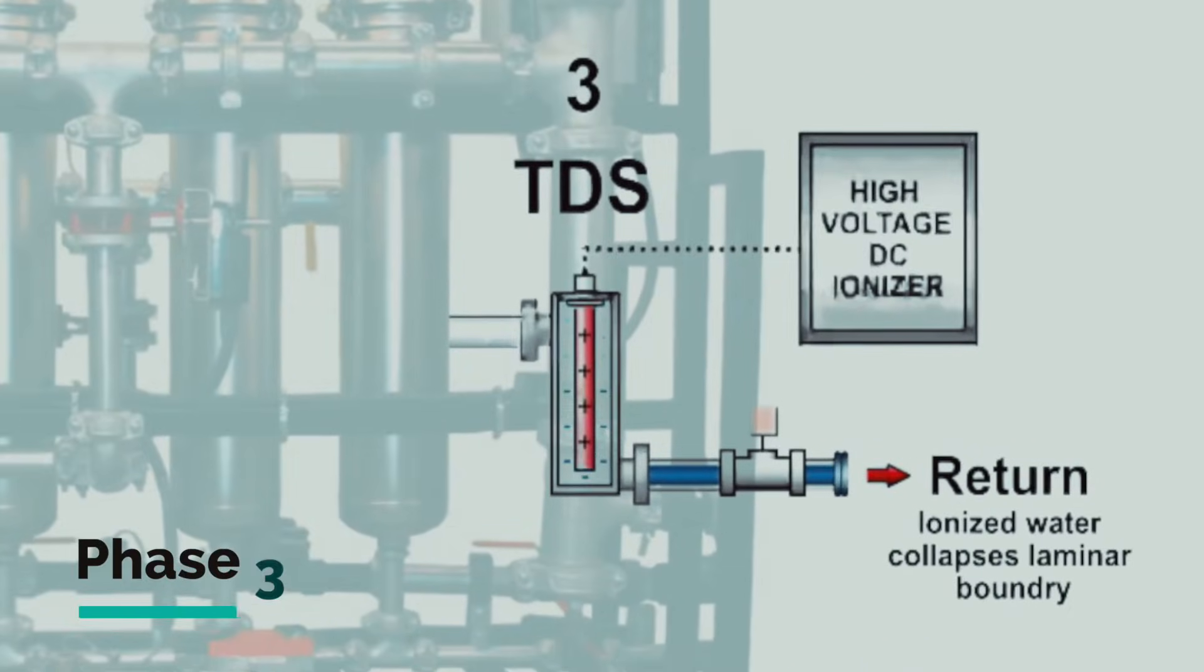Phase three: high voltage positive electrode in a dielectric insulator that emits a static field. This process separates total dissolved solids and reduces water surface tension.